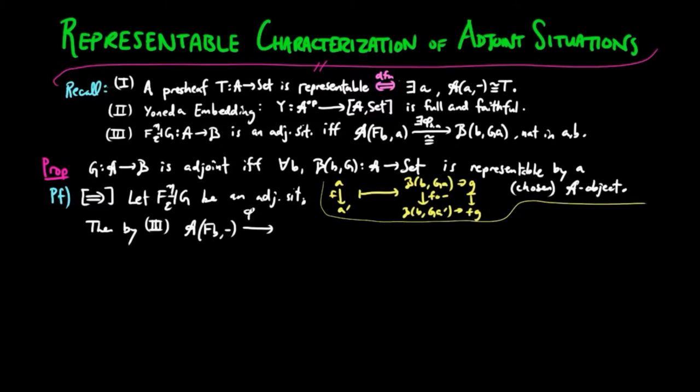In the forward direction, we have by 3 above, phi B is a natural isomorphism between the representable of FB and B(B, G). Therefore, the pre-sheave B(B, G) is representable.